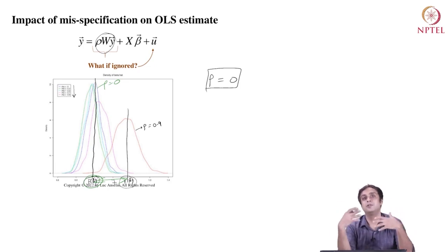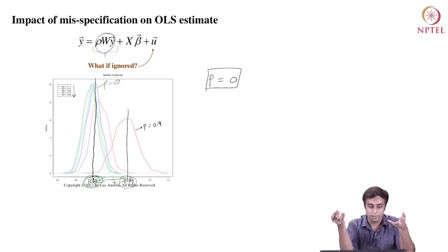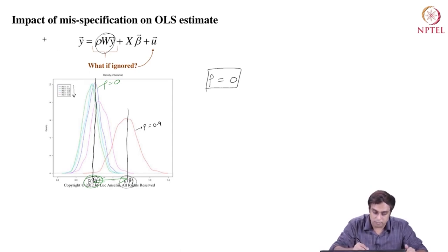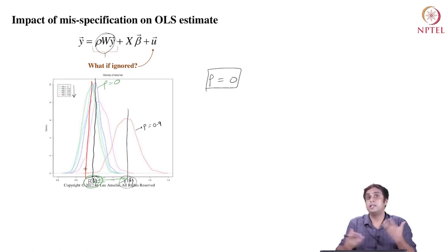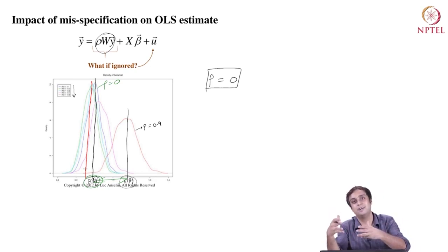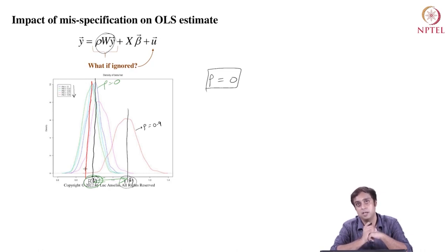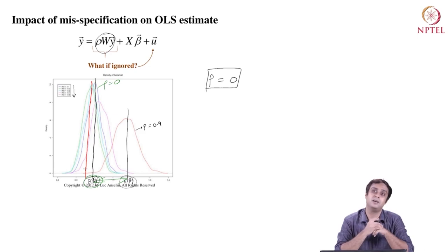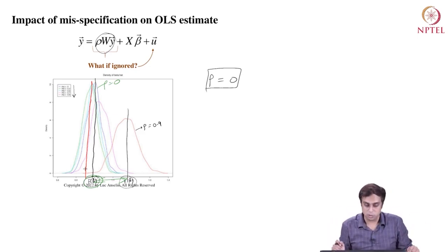Another thing to note is that the direction of bias is not automatically clear — it might be under-reported or even over-reported. Going from rho equals 0 to rho equals 0.2, the total effect actually comes down. So these things depend on context and setting. The key point is that we cannot avoid these effects when they are indeed present in the population process. If we do ignore them, we have a misrepresentation of the population we are trying to explain.